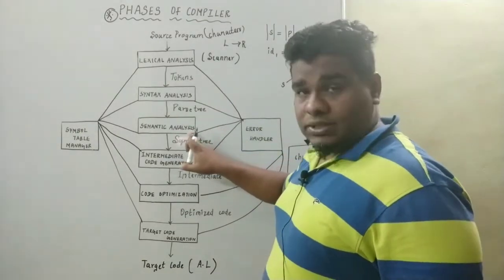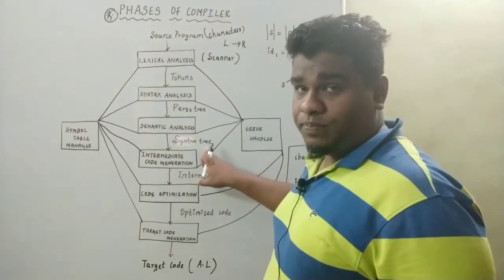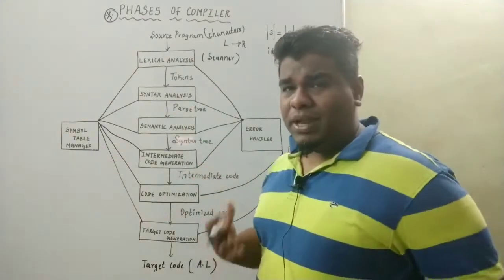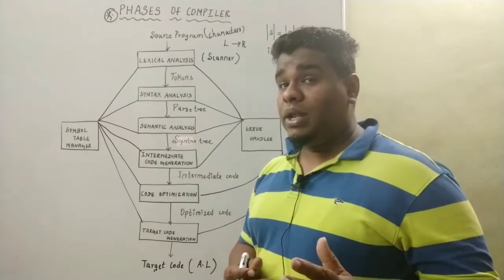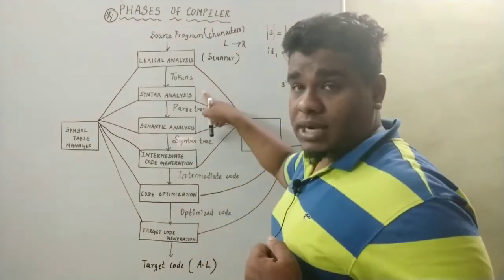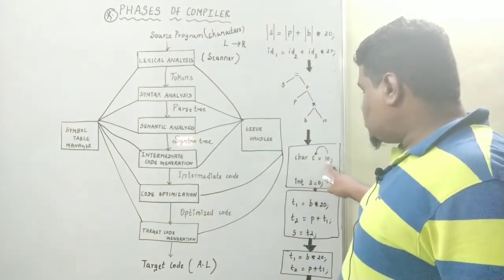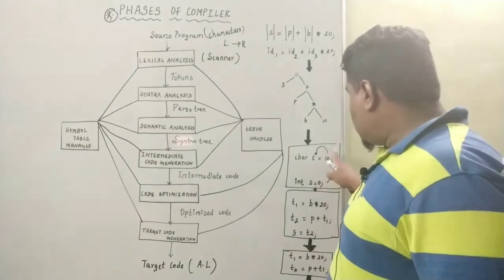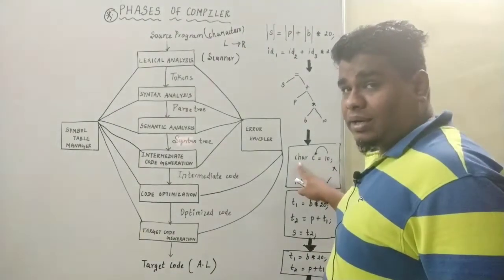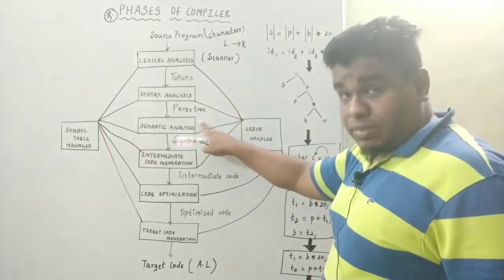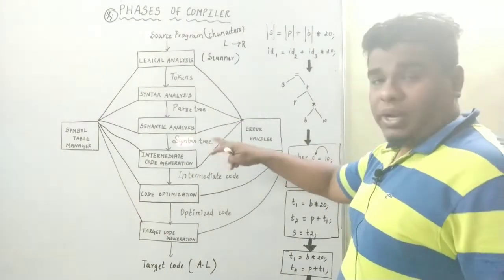Now, semantic analysis receives the parse tree as input and produces the annotated syntax tree. The semantic analysis concentrates mainly on the rules and regulations followed by the syntax analysis — whether the rules have been used or not. For example, if I write char c is equal to 10, this 10 is an integer number and will not be stored in a variable of type char, so this is wrong and will be identified by the semantic analysis. Whereas if I declare int s is equal to 0, that is correct, and that will generate the syntax tree.